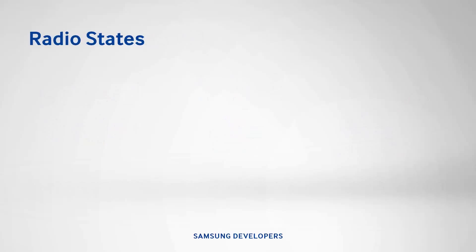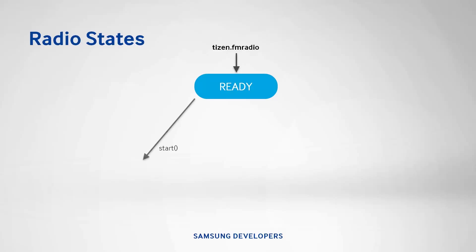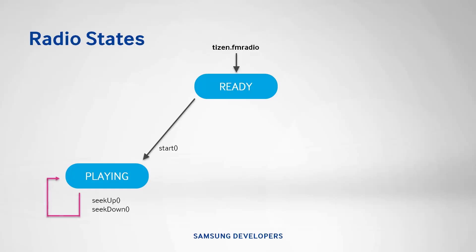This particular API is very sensitive with states, so we need to know what it can do at each state, otherwise we'll get state exceptions. The first state is ready, reached when tizen.radio is first called. From the ready state, you can start the radio which puts it in the playing state. Inside the playing state, you can seek up or seek down. Seek up makes the radio search for the next higher available station, while seek down searches for the next lower station.